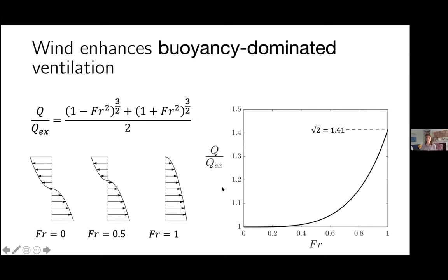That was wind-dominated ventilation — mostly wind with a bit of temperature difference, Froude number greater than one. We can also look at the buoyancy-dominated case where the Froude number is between zero and one. On the left we have the velocity profile at the window for pure buoyancy (exchange flow), and as you increase wind velocity while keeping temperature difference constant, you move across towards the profile at Froude number equal to one. You can describe the ratio Q over the exchange-flow Q as a function of Froude number.